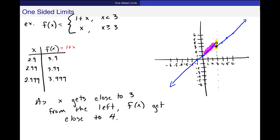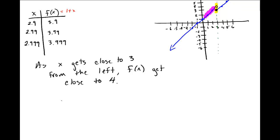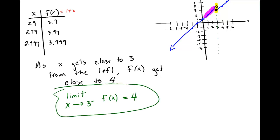You look at output values as inputs get closer and closer to the x value you're interested in. In mathematical notation, we write: the limit as x goes to 3 from the left — indicated by a minus sign after the 3 — of f of x equals 4. That means as x approaches 3, f of x moves closer and closer to 4.